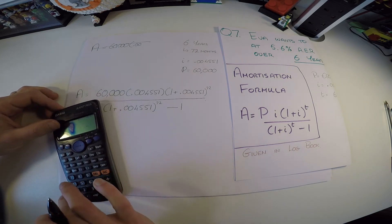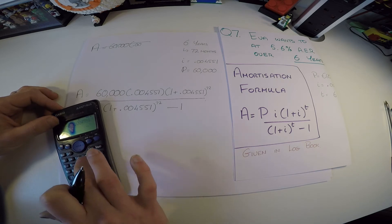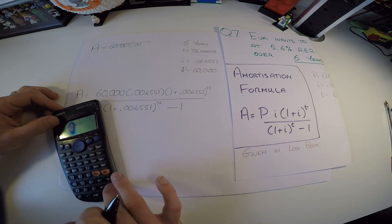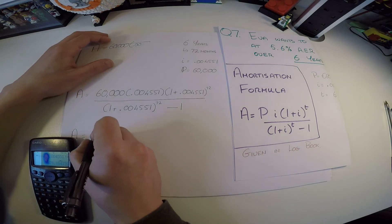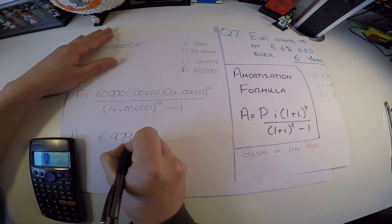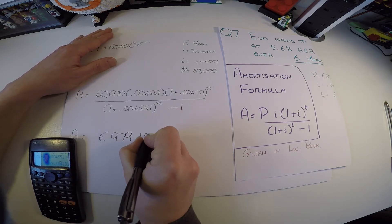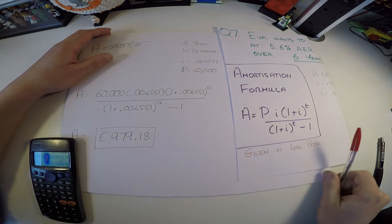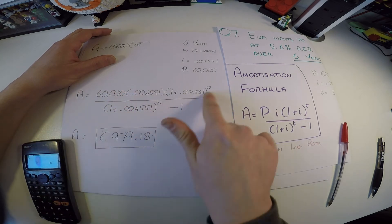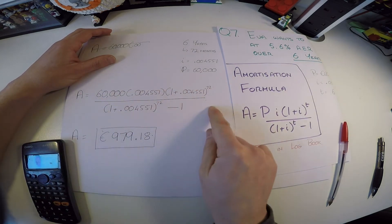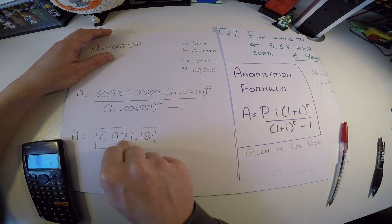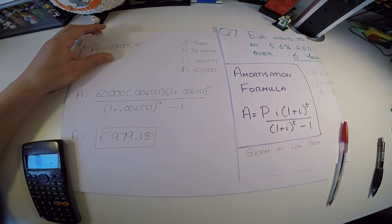Opening brackets carefully: 1.004551 to the power of 72, minus 1, close bracket. The result is 979.18 when rounded — that's her monthly repayment. Make sure you try this on your own calculator and confirm you get this number.